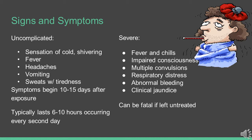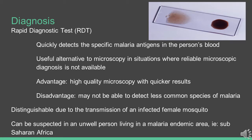If these symptoms are not treated, it can be fatal. One way to diagnose malaria is through the rapid diagnostic test, or RDT. This test quickly detects the specific malaria antigens in the person's blood and is a useful alternative to microscopy in situations where reliable microscopic diagnosis is not available. One advantage is quicker results, though a disadvantage is that it may not be able to detect less common species of malaria. Malaria can be suspected in an unwell person living in a malaria-endemic area, such as sub-Saharan Africa.